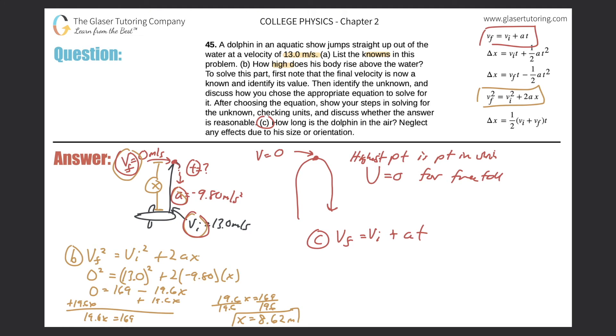So in any case, we have our formula. So let's start plugging things in, right? Zero is the final velocity, the initial velocity will be 13.0, the acceleration is due to gravity, negative 9.80, and then multiplied by the time, which is what we're trying to find.